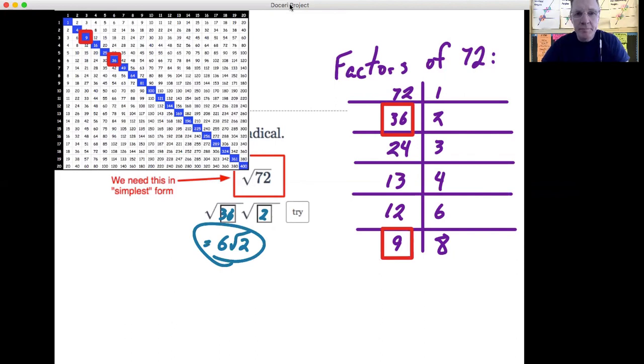So your answer is 6 radical 2. You could have put in 9 and 8. Then what you would have ended up with—well, what's the square root of 9? It's 3. So you'd end up with 3 radical 8. But that's not in simplest radical form, right? Because the square root of 8 can also be simplified because 8 equals 4 times 2. So that would be 2 radical 2. So you would end up with 3 times 2 radical 2, which is 6 radical 2.